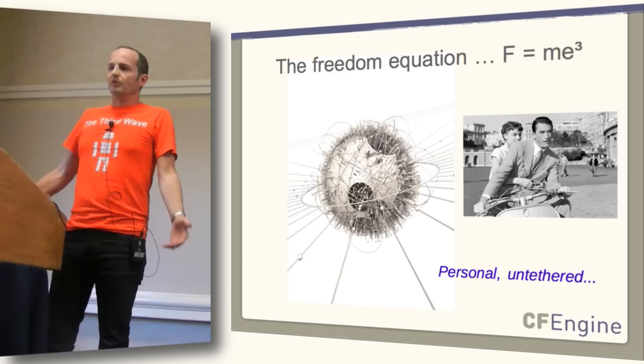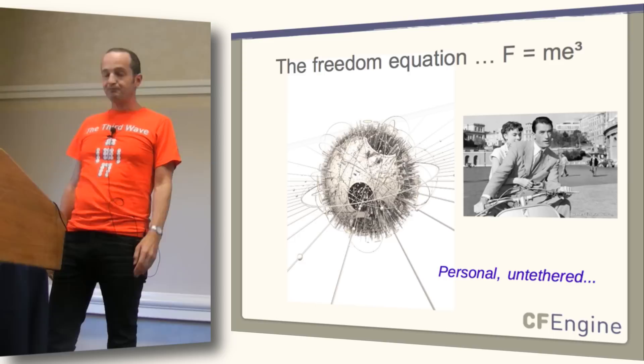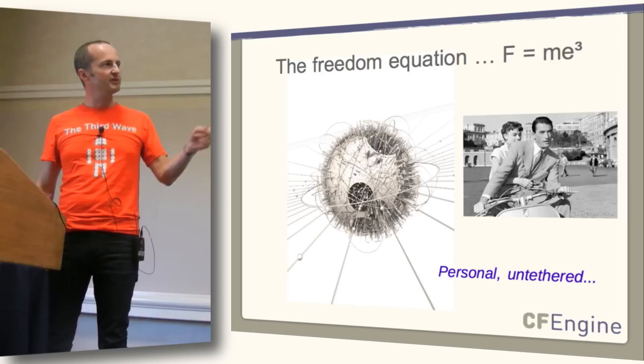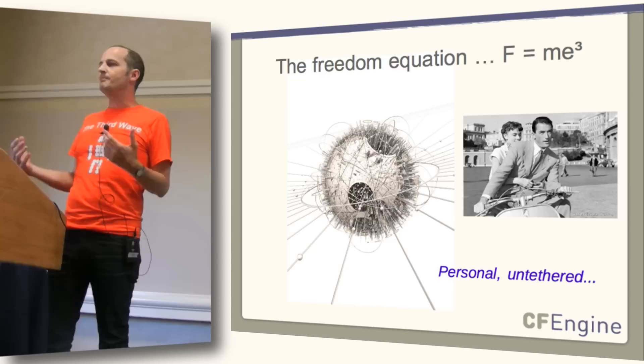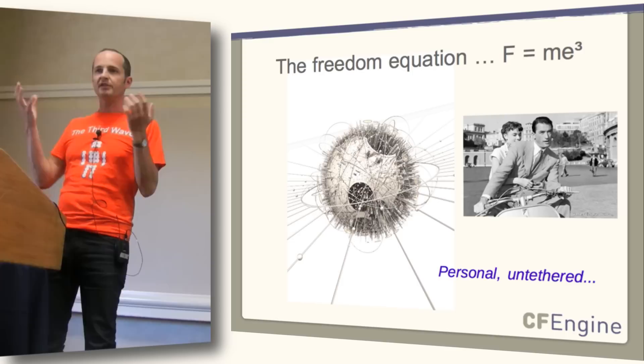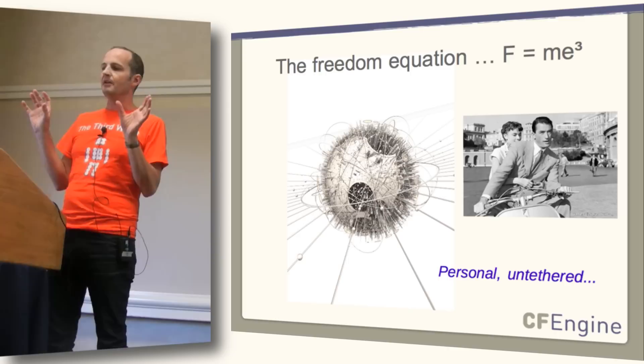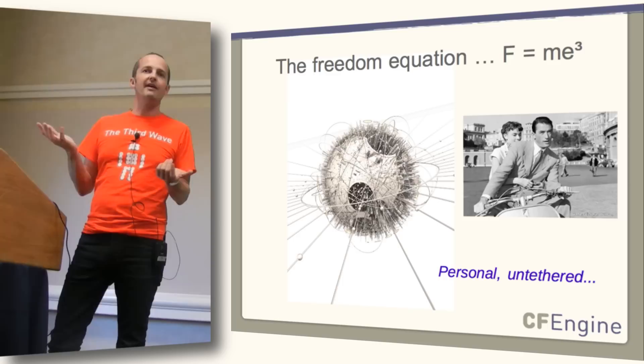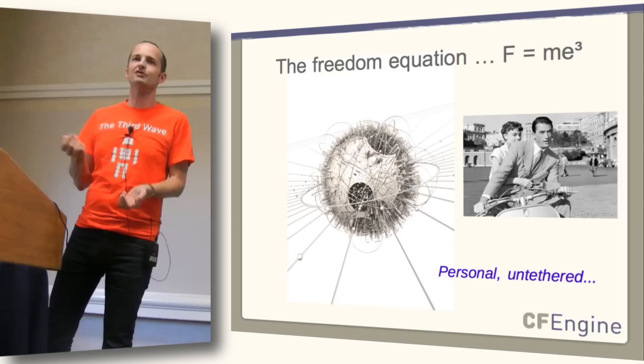Why all this complexity? Why can't we just simplify and make everything the same? Well, I call it the freedom equation — which is freedom is me, me, me. It's all about ourselves. We demand this complexity because of all these electronic devices that we like. Once we got the phones, the pads, the mobile devices, we suddenly had access to services and information everywhere. And we demand more. And the more we demand, the more ideas people have, and the more we get seduced into doing even more stuff.